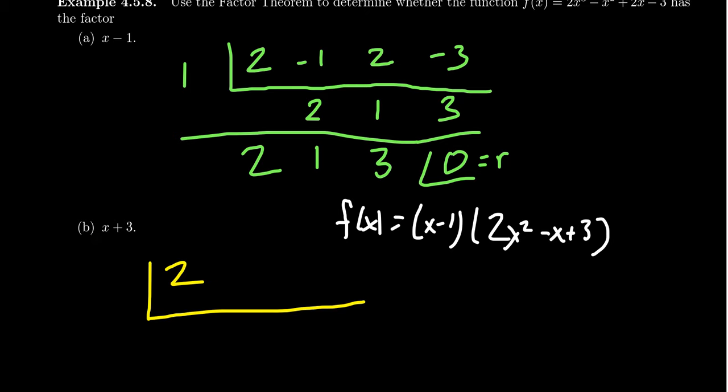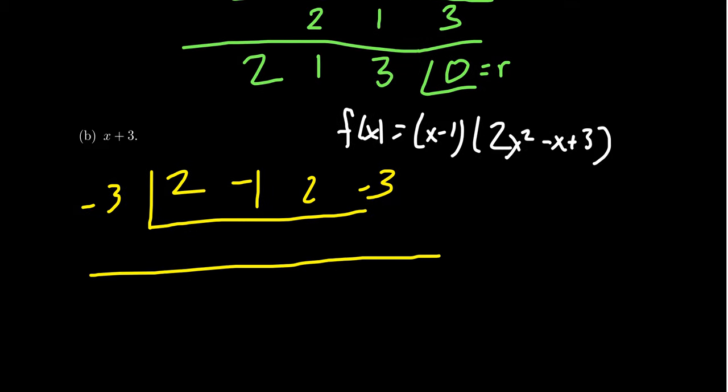You would take 2, negative 1, 2, negative 3. We're going to divide by negative 3 because you have a plus 3 in the factor right there. Go through the calculation. Bring down the 2.